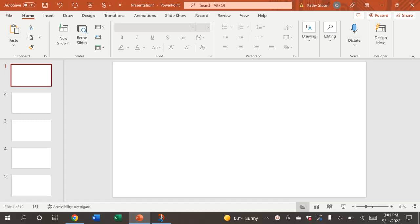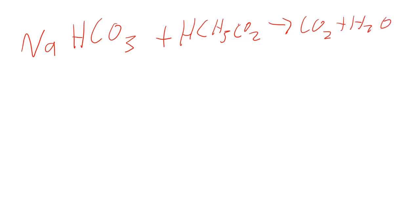What you're going to do is get yourself some baking soda, which has a chemical formula of NaHCO3, and a dilute solution of acetic acid, which is vinegar. You're going to form carbon dioxide, water, and sodium acetate.